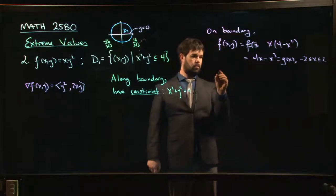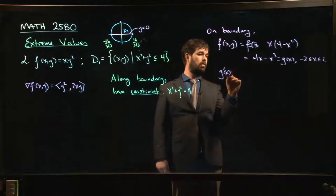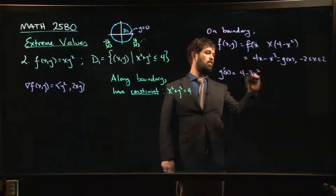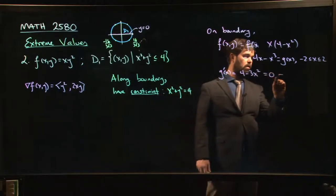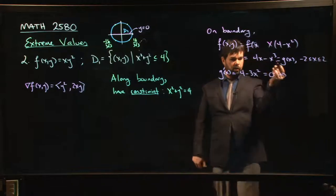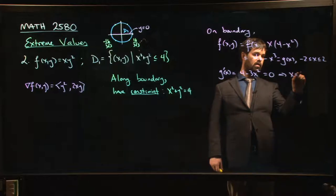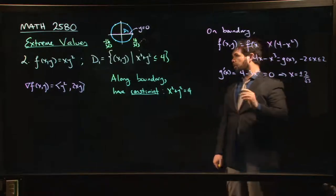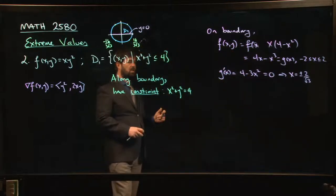I know how to calculate the derivative. G prime, it's 4 minus 3x squared. I want that to be equal to 0. If that's going to be equal to 0, we solve for x and we get that x is plus or minus 2 over the square root of 3. You might remember from the previous video, that's exactly what we expect to get.